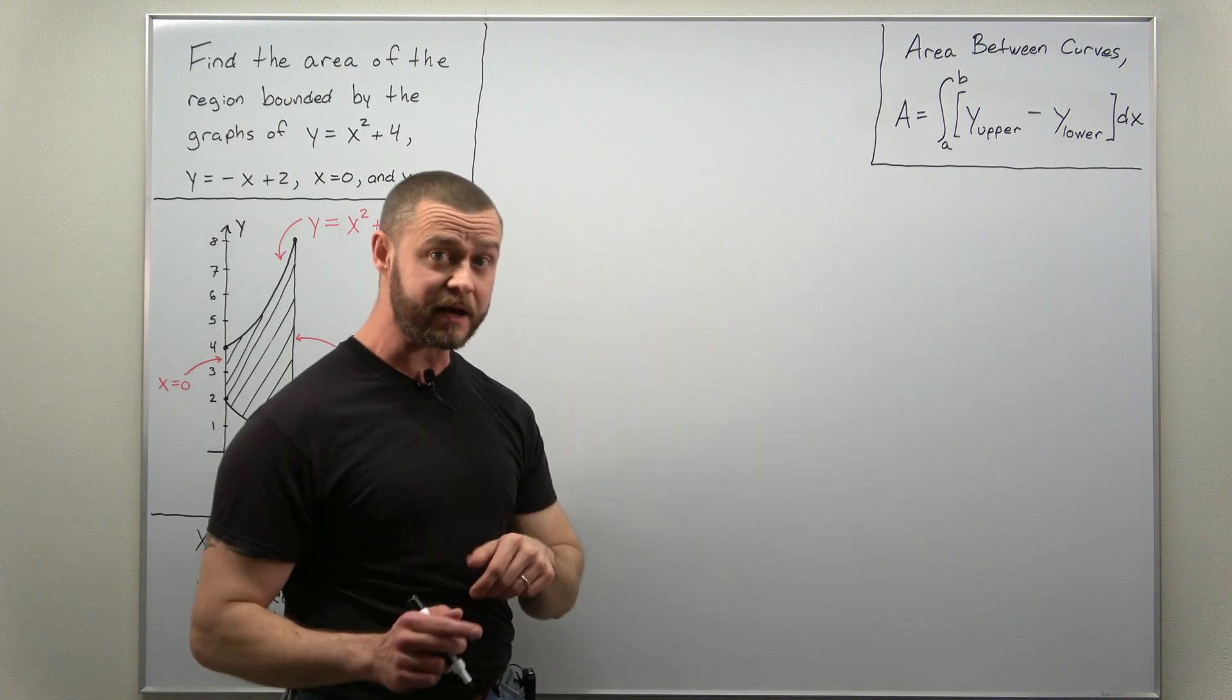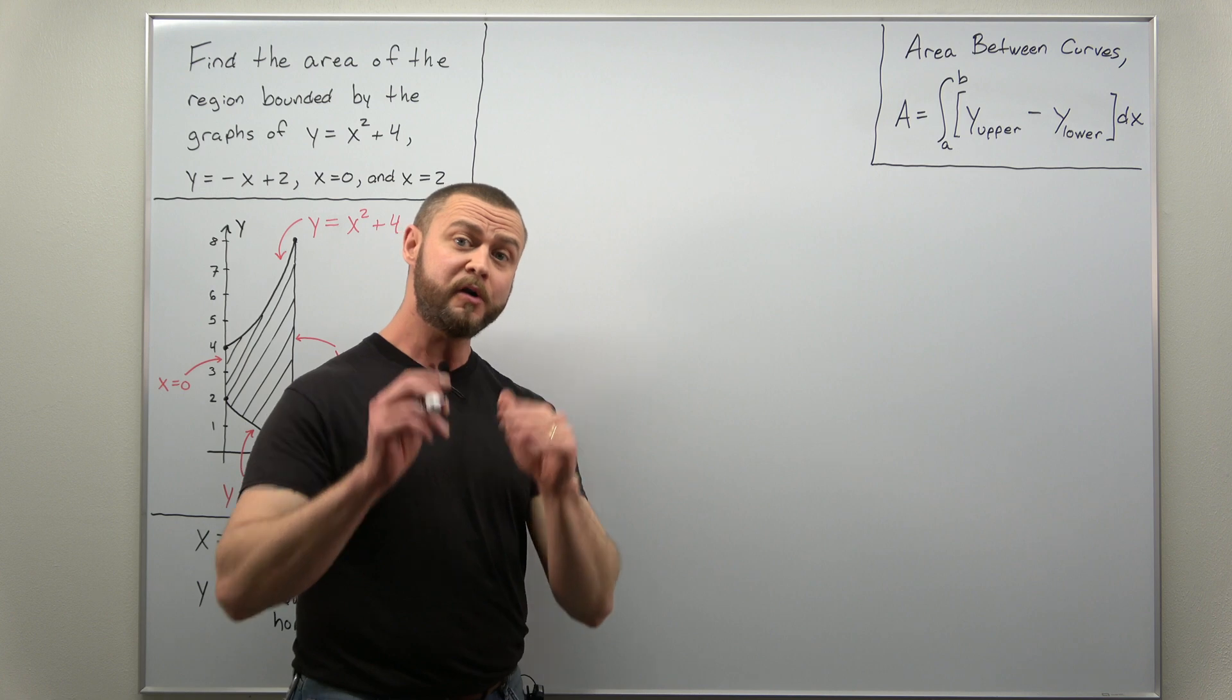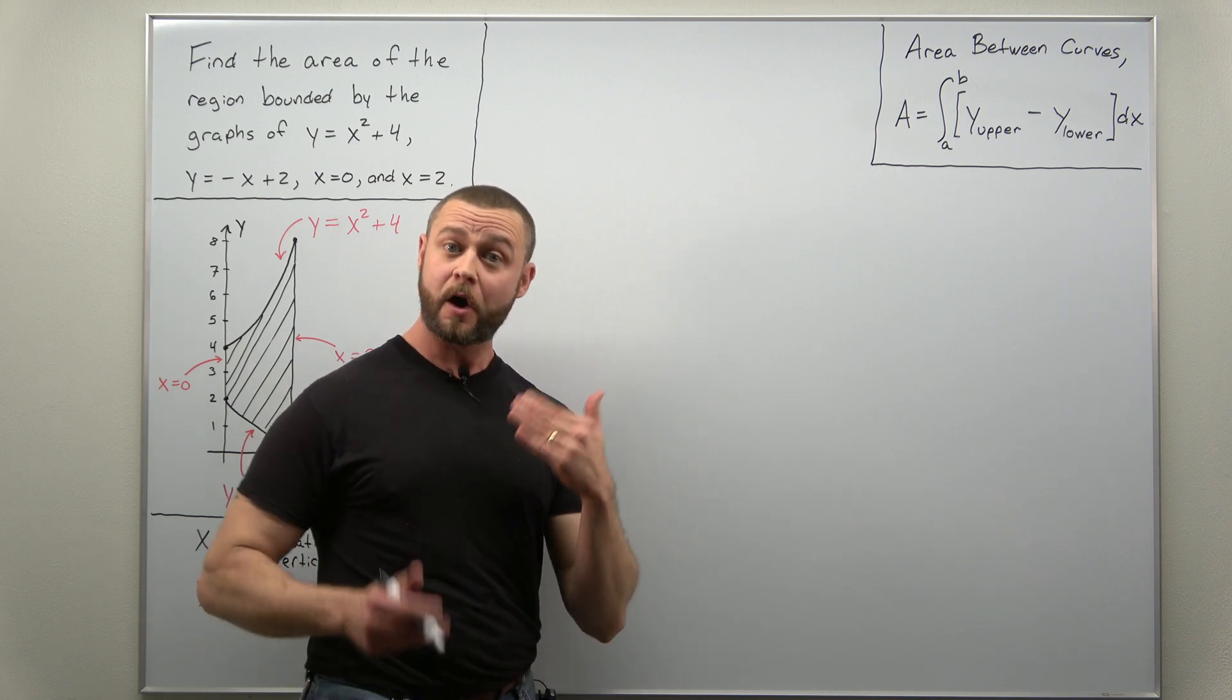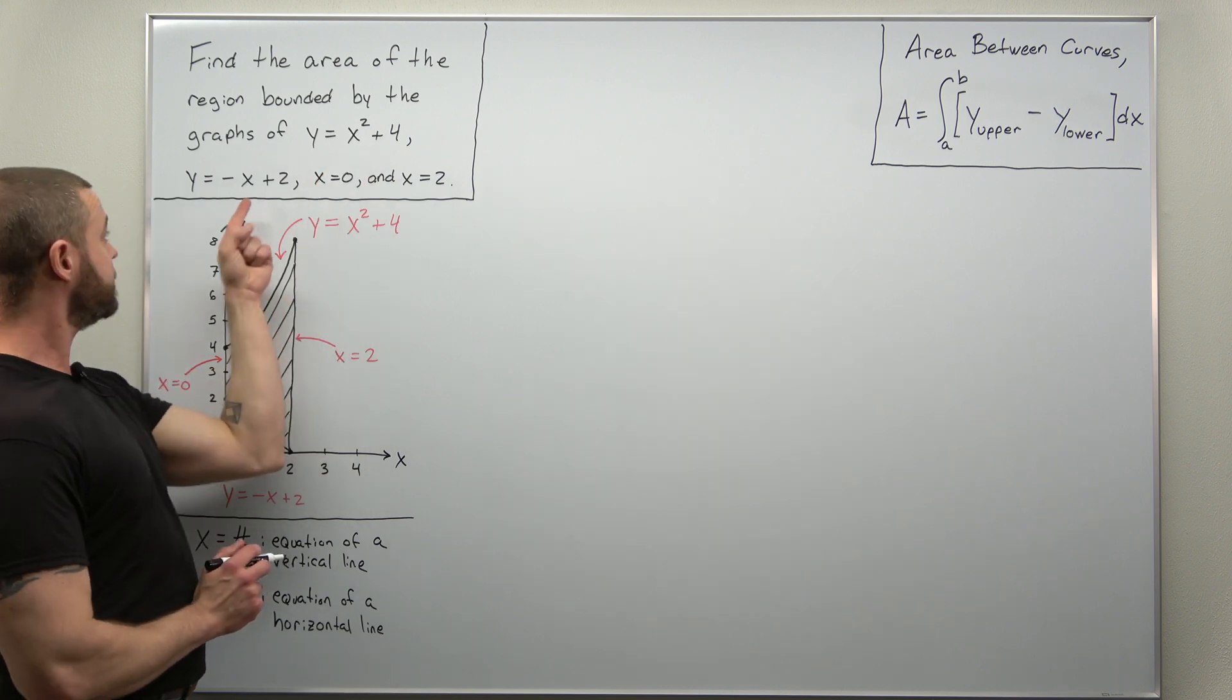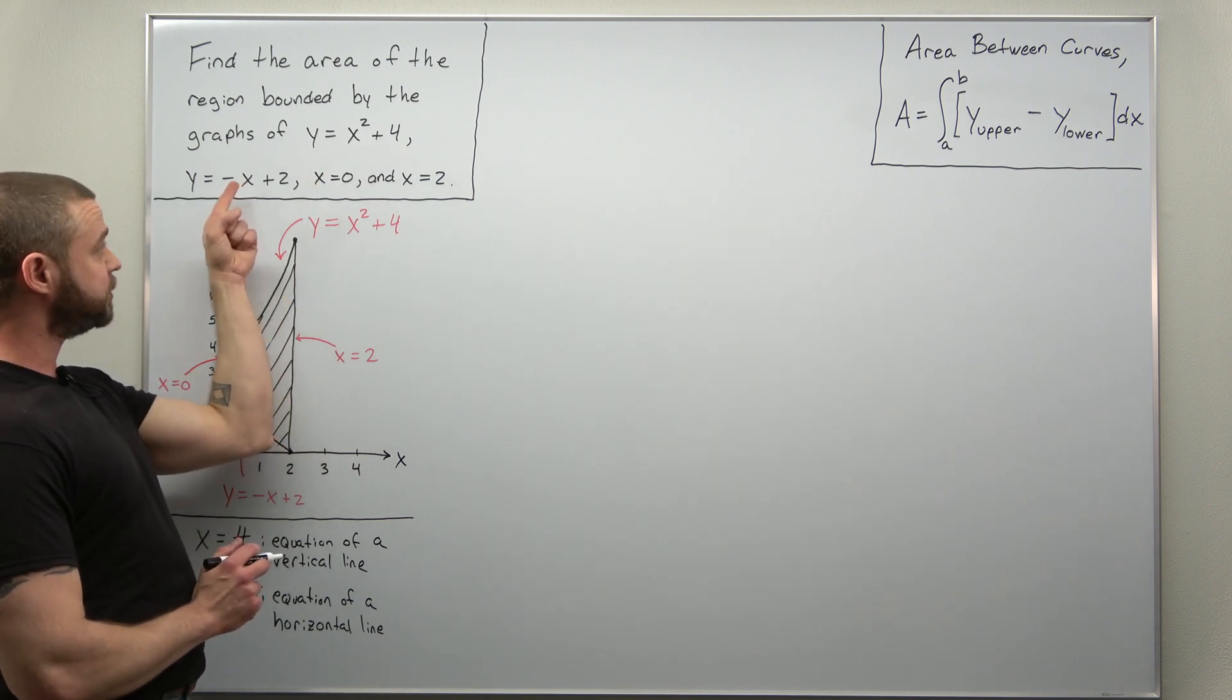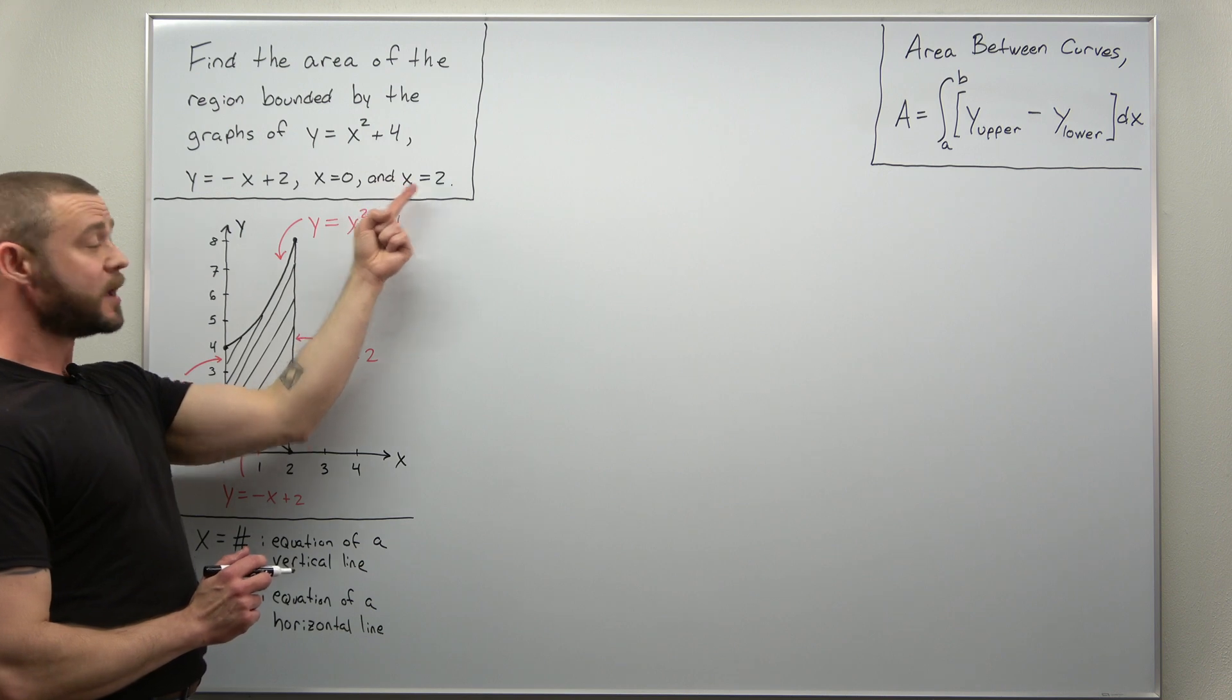Now right now in the beginning of your calculus 2 course, most of the functions and curves are rather simple. Here we have basic parabola x squared plus 4, we have a straight line negative x plus 2, x equals 0 and x equals 2.